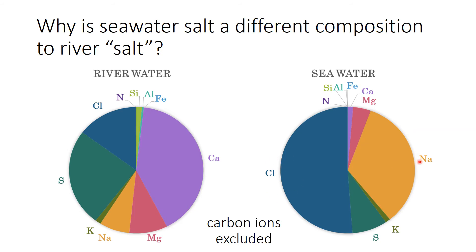When we look at seawater, the proportions have changed — we now have lots of chlorine and lots of sodium, but very little silicon compared to the amount in river water. Something is making chlorine and sodium preferentially more concentrated in seawater, and some process is reducing the relative concentrations of elements, particularly calcium.